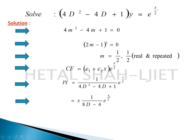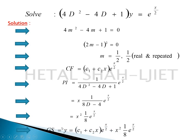As per the rule, write x in the numerator and take the derivative of the denominator, giving x / (8D - 4) · e^(x/2). Substituting 1/2 in place of D: 8(1/2) - 4 = 4 - 4 = 0 again. So as per the rule, multiply by x again: x² in numerator, derivative of denominator is 8, giving PI = x²·e^(x/2) / 8. The general solution is CF + PI.